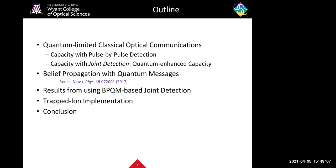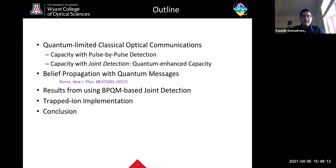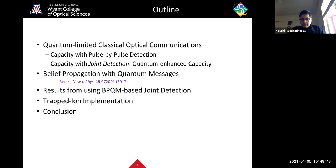I'll begin with setting up the mathematical framework for quantum-limited classical optical communications and talk about the performance gap that exists between pulse-by-pulse detection versus joint detection. Then I'll introduce belief propagation with quantum messages, which is the quantum algorithm forming the workhorse behind our design of a structured receiver. I'll present results for an exemplary 5-bit linear tree code, briefly present results from a trap-ion implementation, and conclude with a summary and outlook.